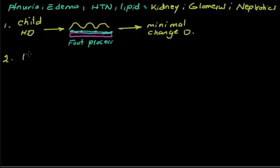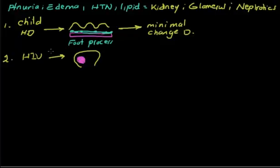The second disease: if the patient suffers from HIV, look at their glomeruli — part of the glomeruli is affected, and not all of the glomeruli are affected. Part of them, segmental. So this disease is called focal segmental glomerulosclerosis (FSGS).